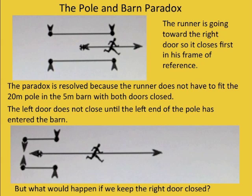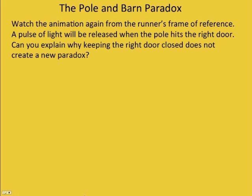Well, the people that came up with this paradox, that didn't stop them. They said, okay, let's imagine that we keep the right door closed. And so if we keep it closed, and it's very strong compared to the pole, then the pole would hit it, right? And so how might that change things? And so the pole would stop, and then this door would close on it, and it would be sticking out again. So let's watch the animation again from the runner's frame of reference with one change. We're going to release a pulse of light when the pole hits the very strong right door. And can you explain why keeping the right door closed does not create a new paradox?